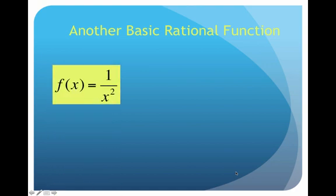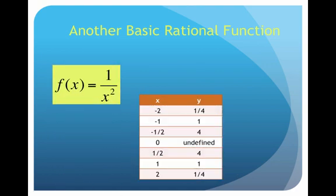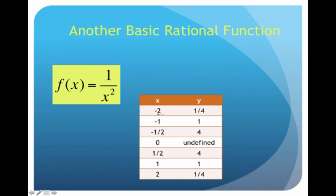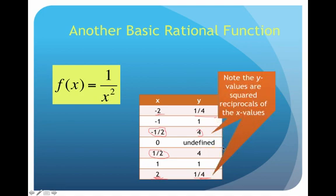Let's talk about one more basic rational function: 1 over x squared. Going through a domain-range table — if I plug in negative 2, I get one fourth. Notice that if I plug in positive 2, I'm also getting one fourth. In the same way, dividing by a fraction means multiplying by the reciprocal, so we get a range value of 4. Whatever we plug in for x, the y values are squared reciprocals of the x values.